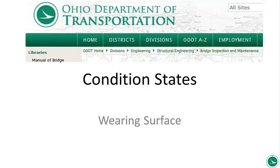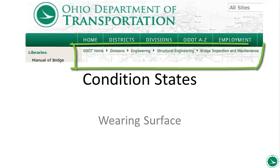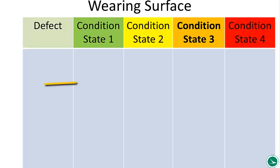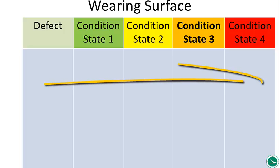In this video, I'm going to discuss the condition states as they pertain to wearing surface. This includes all wearing surfaces — the rigid and the flexible, the asphalt and bituminous, and the cementitious. This is our basic chart: as we move from left to right, we move from green to red. Green is good, yellow is fair, orange is poor, and red is severe.